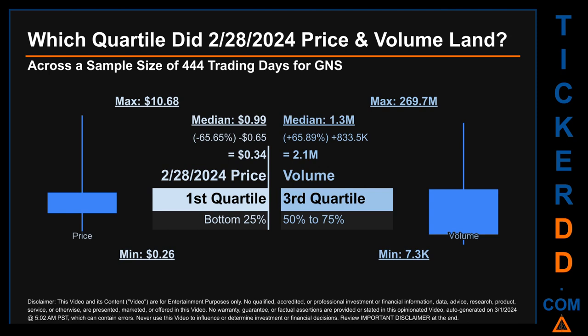Hello, my name is Maria. Which quartile did February 28, 2024 price and volume land in? Across a sample size of 444 trading days, the maximum end-of-day price for GNS was $10.68, while the minimum was $0.26. Within that price range, February 28, 2024's price of $0.34 landed within the first quartile, meaning it was within the bottom 25% of all sampled end-of-day prices.